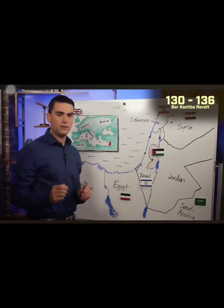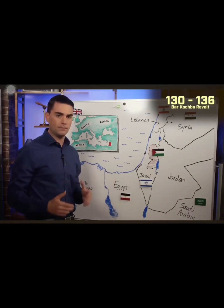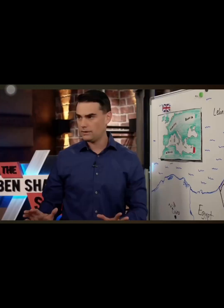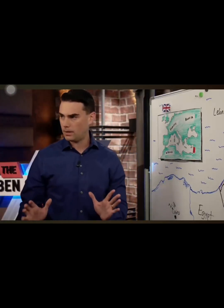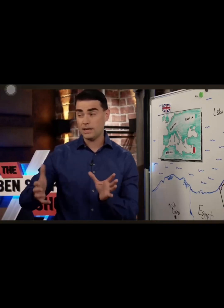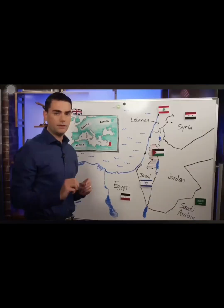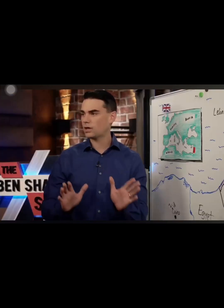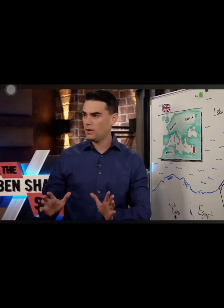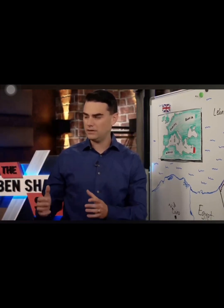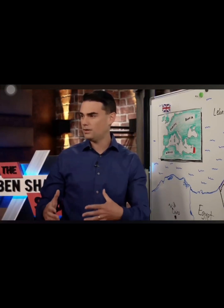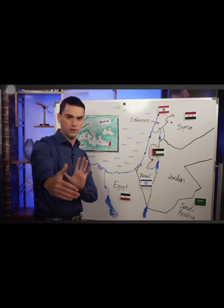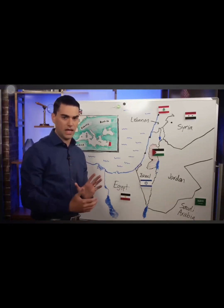From 130 to 136 CE, there is a massive revolt by the Jews under a general named Shimon Bar Kochba. The Bar Kochba revolt was extremely damaging to the Roman Empire, requiring extraordinary resources to suppress — it was almost an independent kingdom for four or five years. Afterward, the Romans renamed the area Palestine as an insult to the Jews. So when people say 'historic Palestine,' understand that the name Palestine was meant as an insult to the Jews, who were considered the historic inhabitants of the land. It is first used in 136 CE — a solid 1,200 years after the Jews first entered the land.